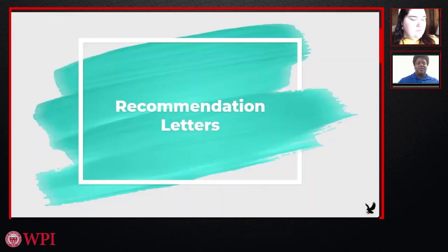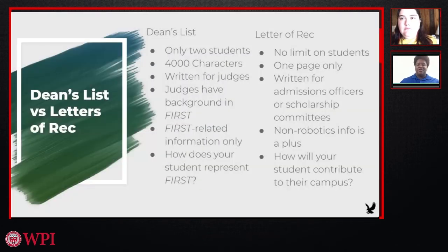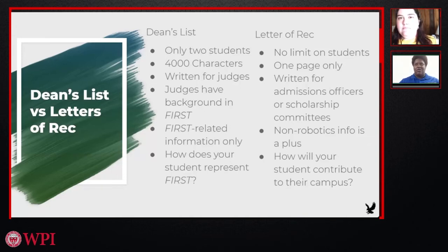Now let's talk about recommendation letters and how they're different from the Dean's List essay, and how some details from the Dean's List essay can be incorporated into recommendation letters. The big difference is that for Dean's List, you can only nominate two students. It's 4,000 characters. It's written for judges who specifically have a background in FIRST or are at least provided with a lot of context for FIRST. The Dean's List really focuses on FIRST-related information only, and it's mostly about how does your student represent FIRST. So the Dean's List has a very limited and focused scope, and at its max length is quite a bit longer than what you want to write for a letter of recommendation.